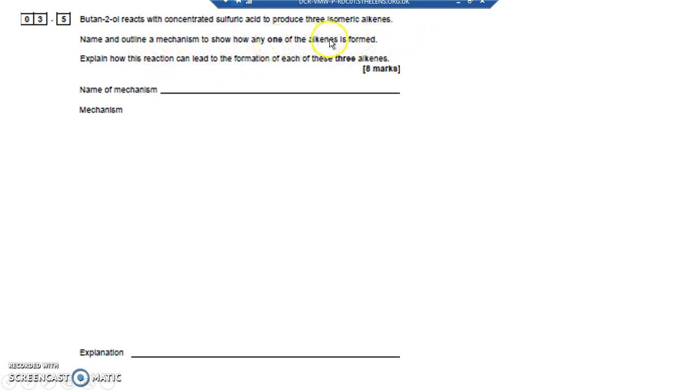Name and outline a mechanism to show how one of the alkenes is formed. So we've got a double bond and it's a mechanism. The mechanism type is going to be elimination because you're removing water, eliminating water from something. Explain how this reaction can lead to the formation of these three alkenes. Okay, so removal of water is elimination for a start. Let's have a look at the mechanism.